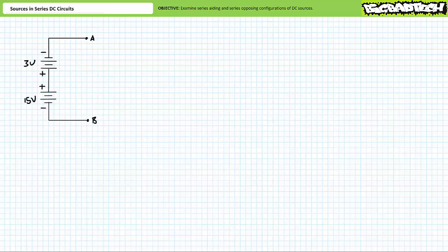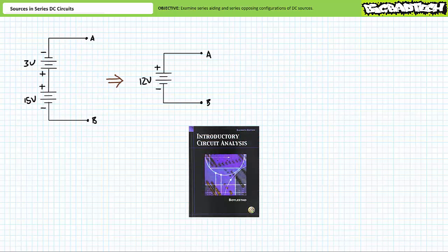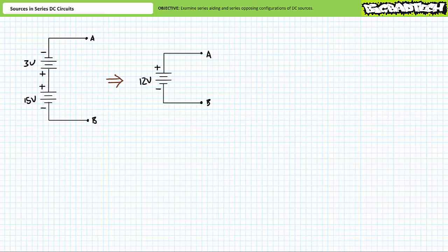Let's now examine a different type of series arrangement of sources: that of series opposing. A series opposing arrangement is one where the polarities of each source oppose each other, such that conventional current travel induced by each source would flow in the opposite direction. For example, consider a series opposing relationship of a 15 volt source and a 3 volt source — why not just use a 12 volt source? No one ever does anything this dumb because a single 12 volt source is way cheaper and lighter than an expensive heavy 15 volt source counteracted by a 3 volt source.